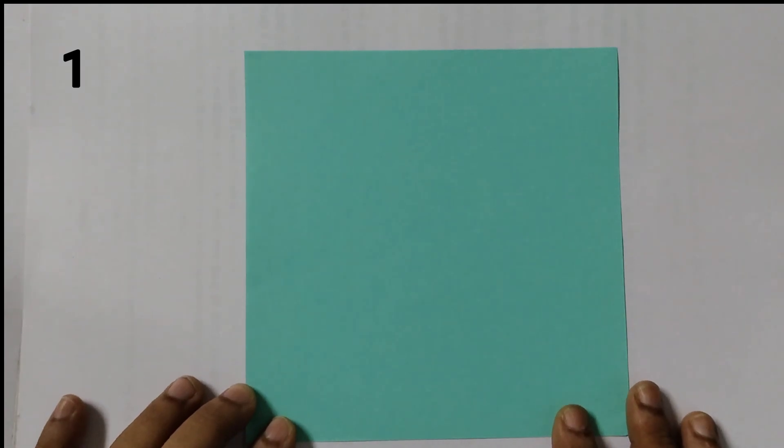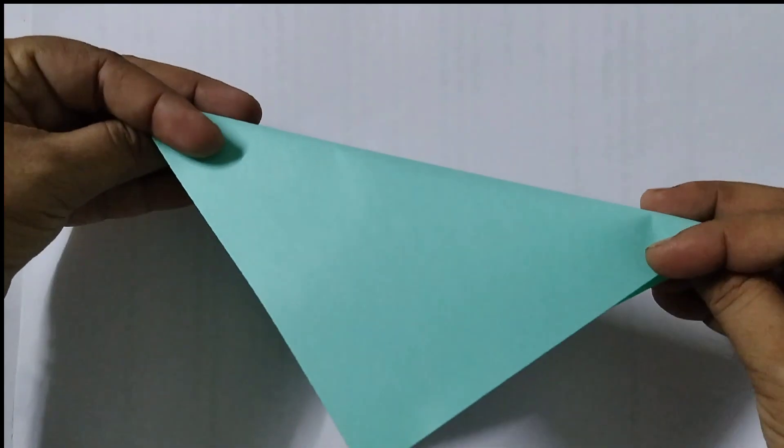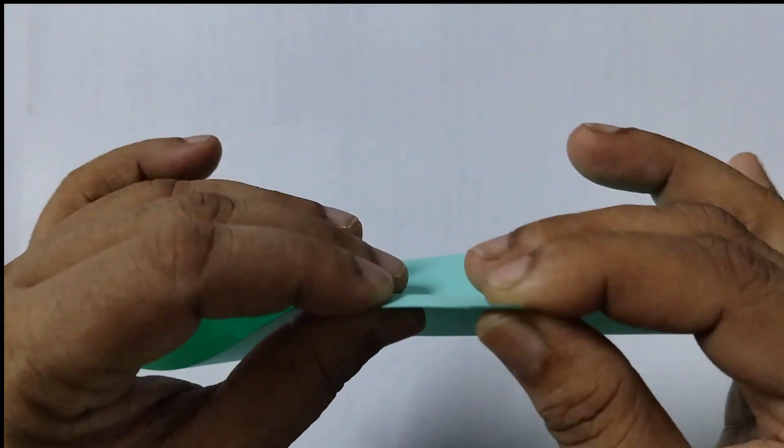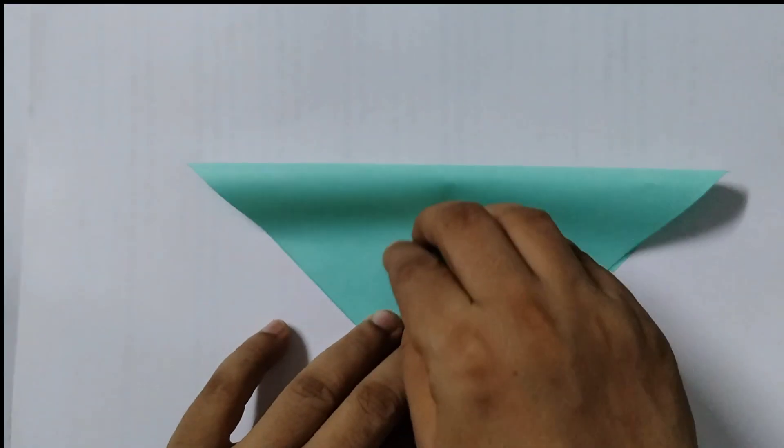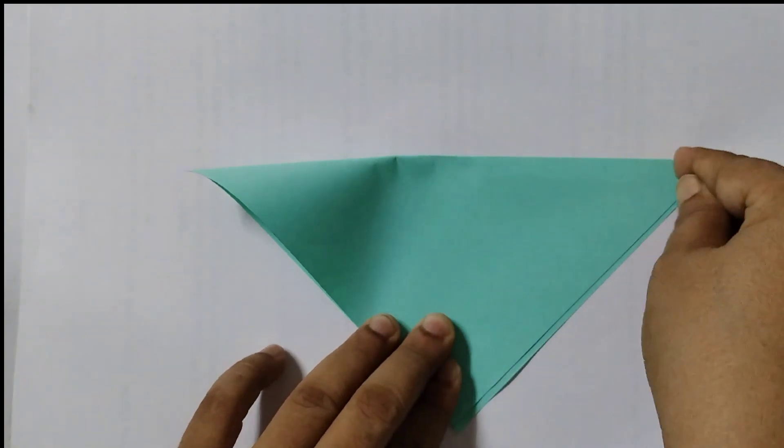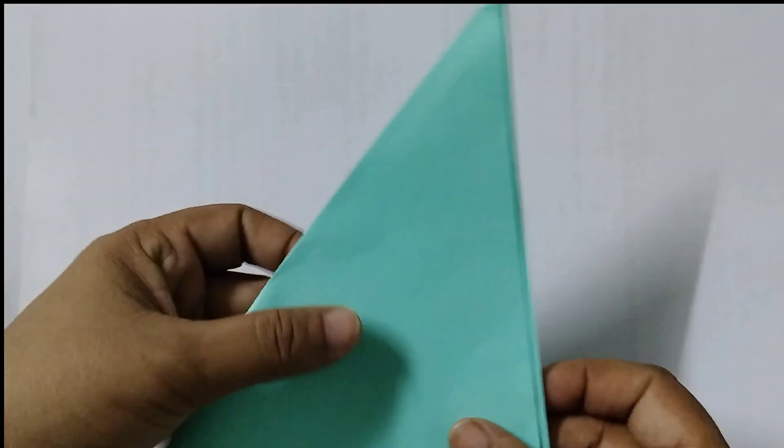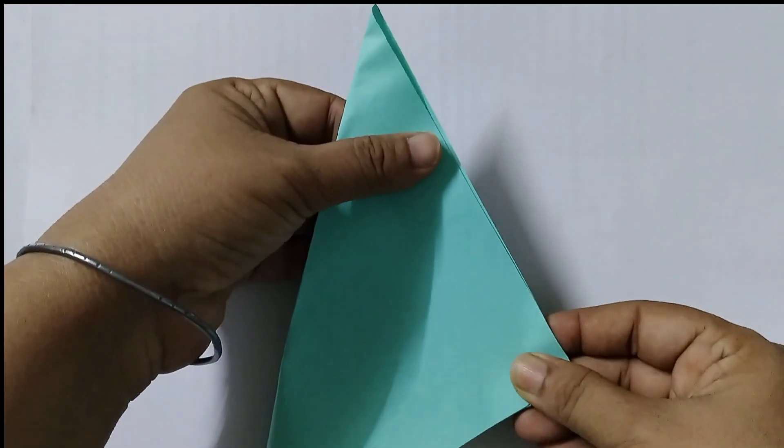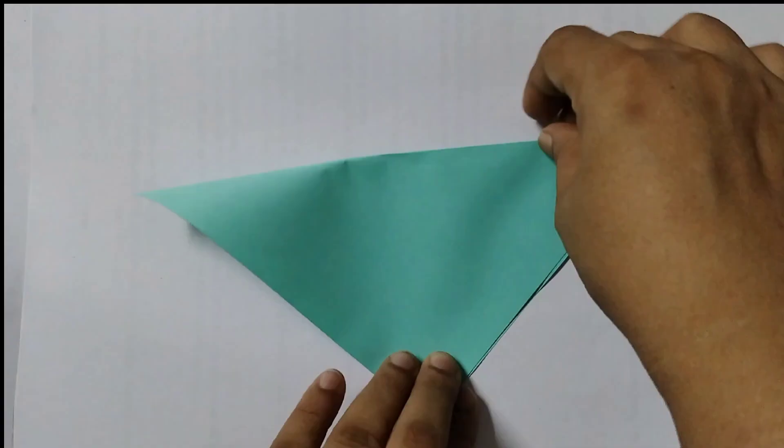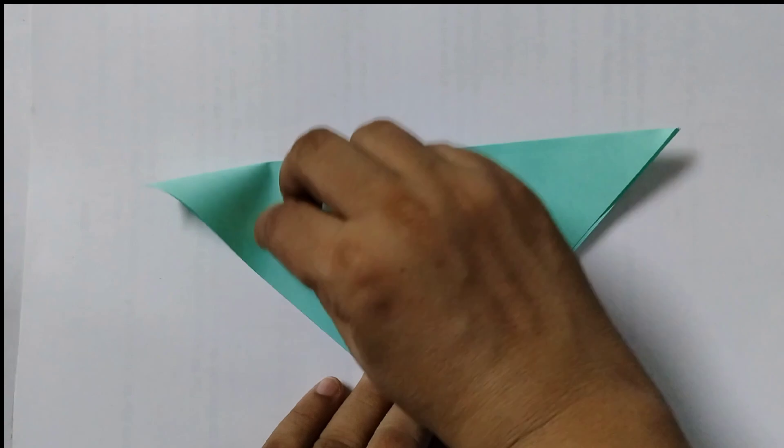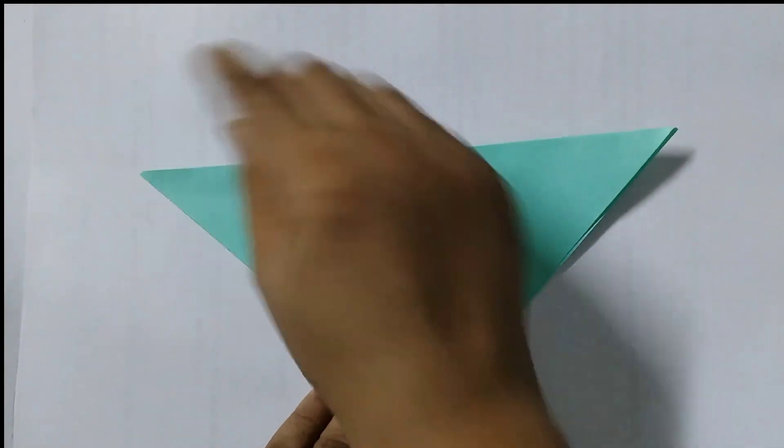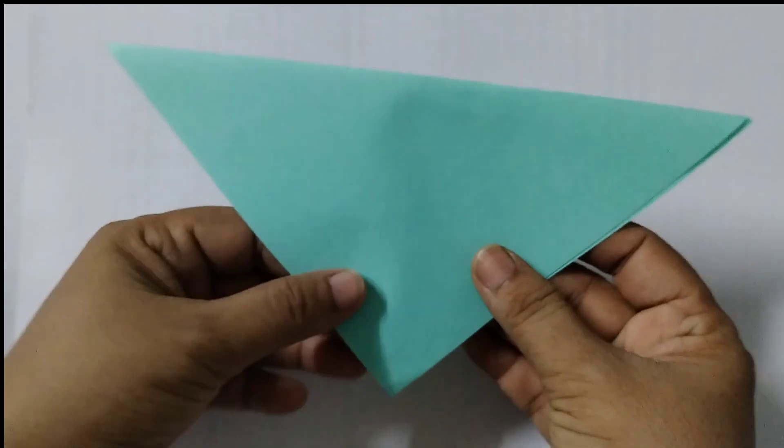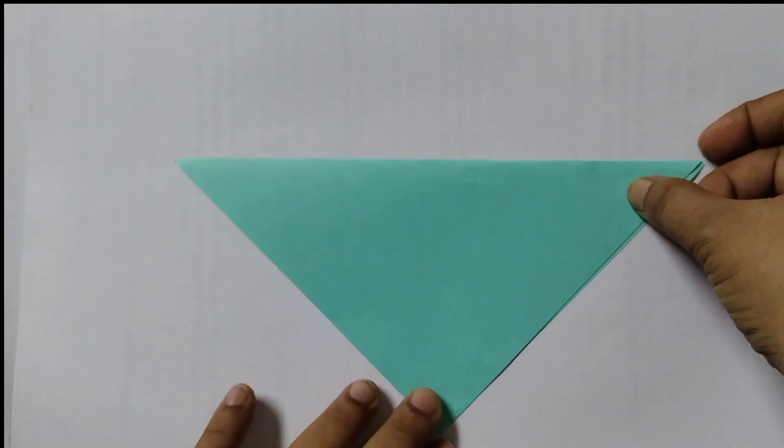First step is to fold it. Fold it like this. So when we fold it, these two corners should be together like this. And then you press it with your finger like this. Do it properly otherwise we will not get the crease properly. Somewhat like this. This is your first step.